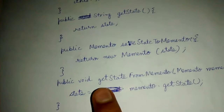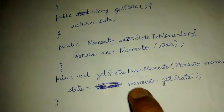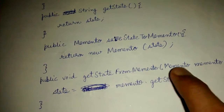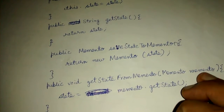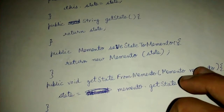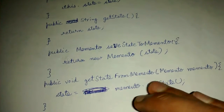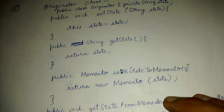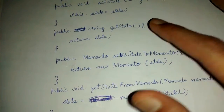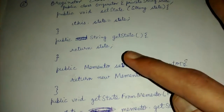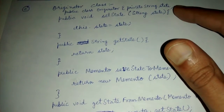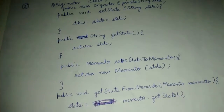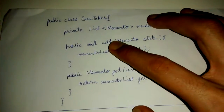The memento object represents the current state — you are trying to store the current state into a memento object and returning that same memento object. For getting the state, you just get the state from whatever memento object you passed. The get state method simply returns the state, the set state method simply sets the state, and state is a private member of this class.